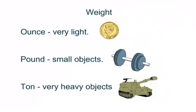So, the first thing we're going to talk about is weight. Ounces are very, very, very light. About the weight of a coin, like what you see there. Pounds are, you know, smaller objects to medium-sized objects. They definitely are the most common system that we use to measure with is in pounds. So, here's a little dumbbell to kind of give you an example of pounds.